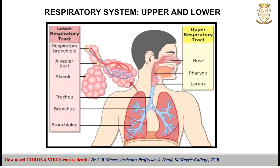The larynx leads to a large windpipe called the trachea. The trachea branches into two bronchi. The bronchi enter the lungs and are further branched into a tree-like structure called bronchioles. Each bronchiole ends at numerous sac-like structures called alveoli. Air passes freely through the respiratory tract and reaches the alveoli, which are the endpoints of the respiratory tract.